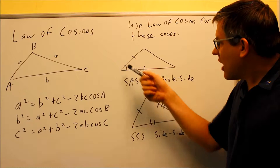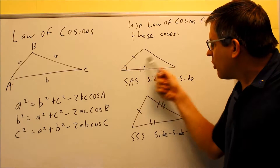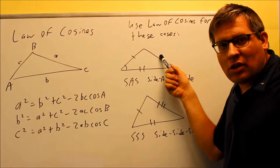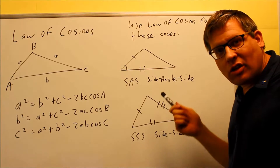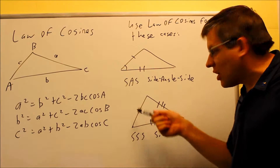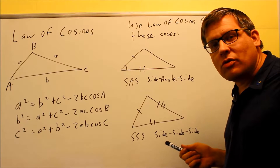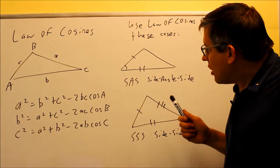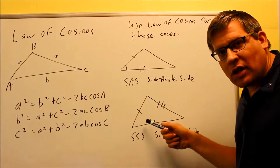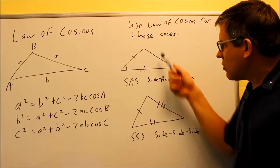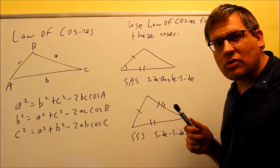For side-angle-side (SAS), you wouldn't be able to use the law of sines because we don't have a side that's opposite a given angle, so this is a case where you want to use the law of cosines. Another case is if they give you just three sides only with no angles — that's another instance where you definitely want to use the law of cosines, because law of sines requires a given angle. So these are the two cases where, if you can't use law of sines, you want to use the law of cosines.